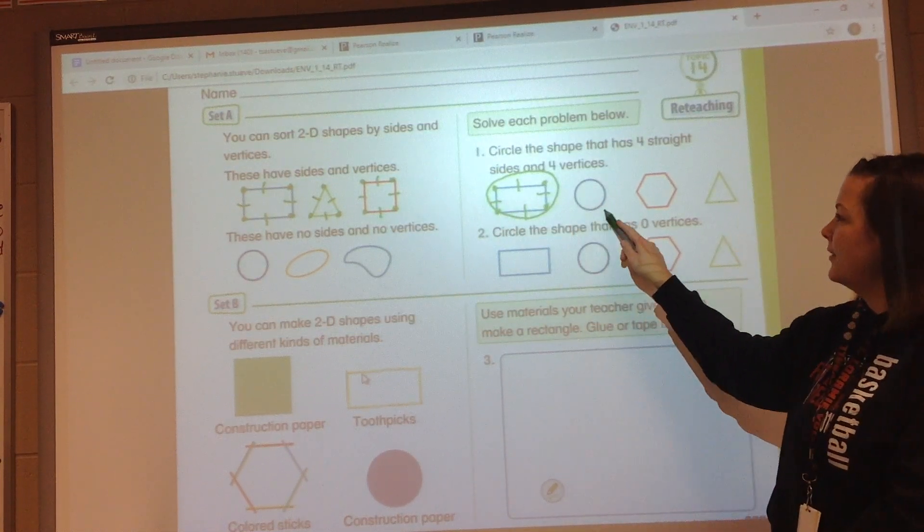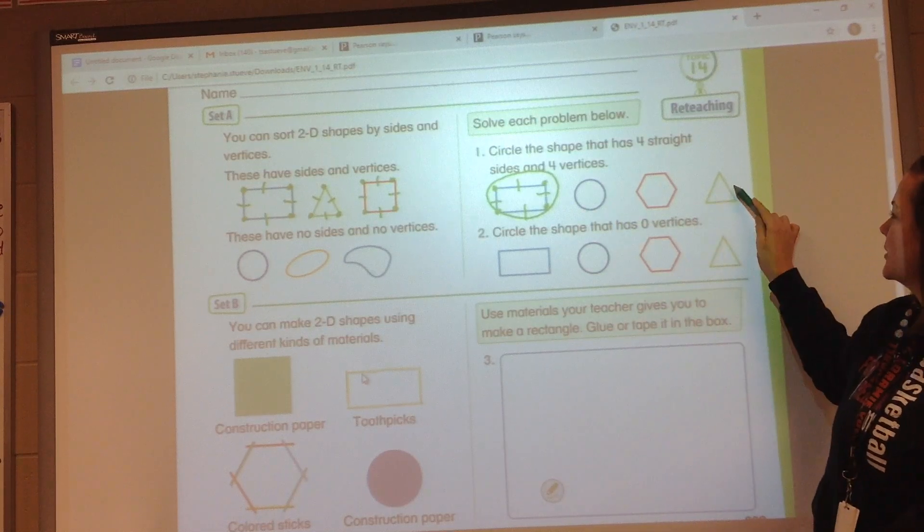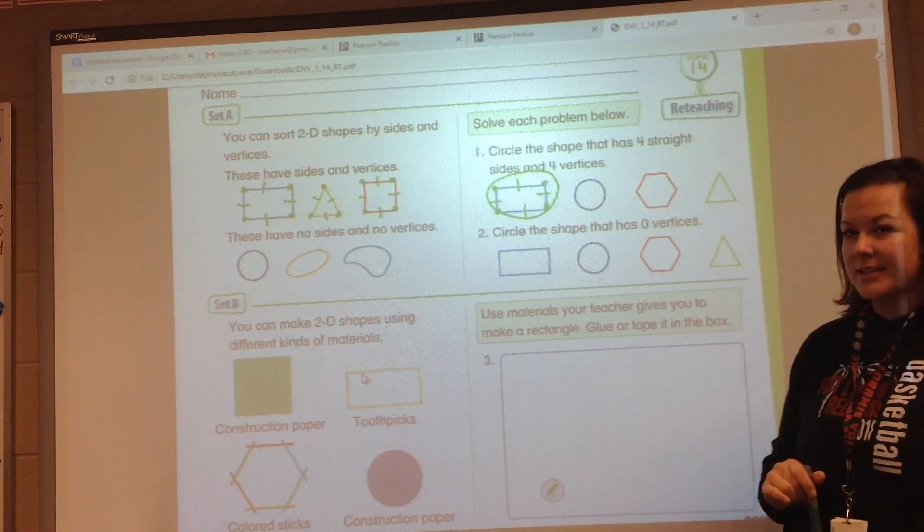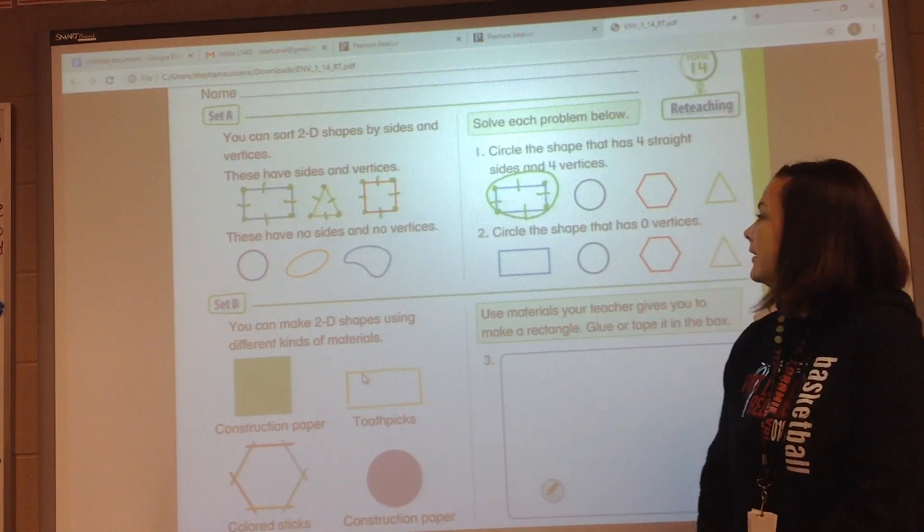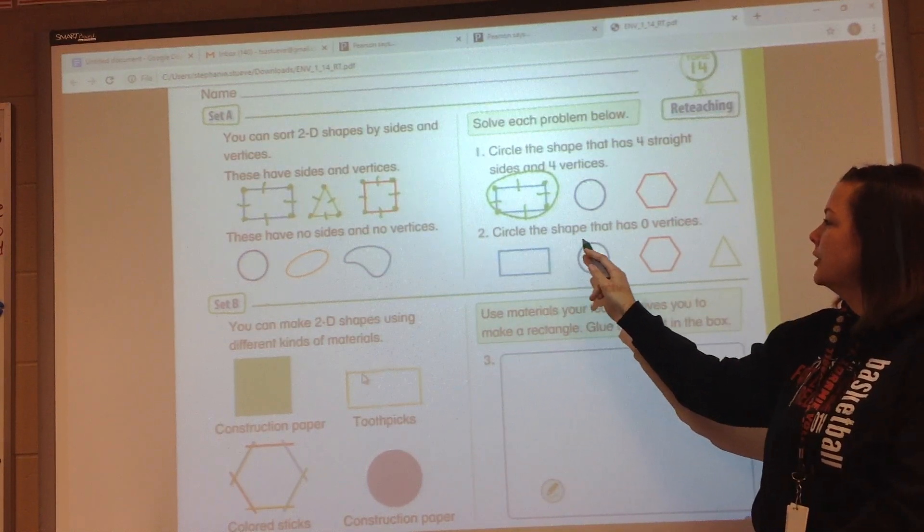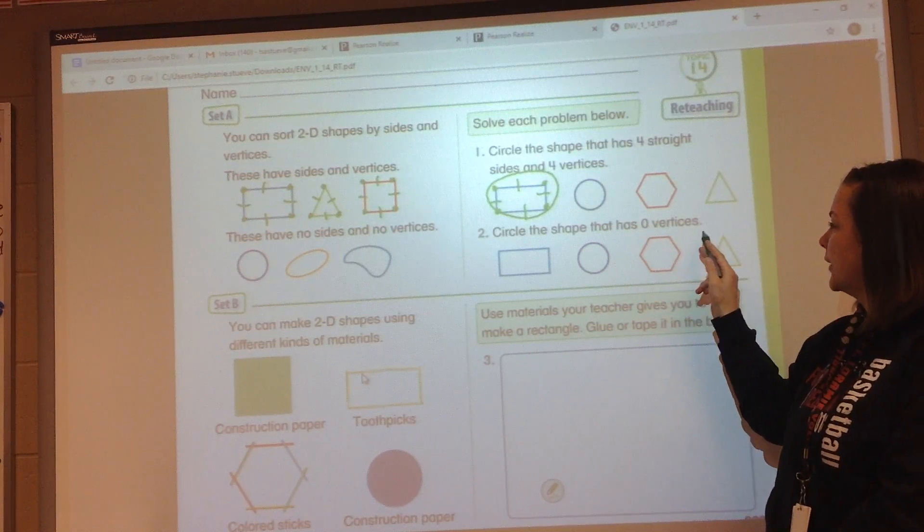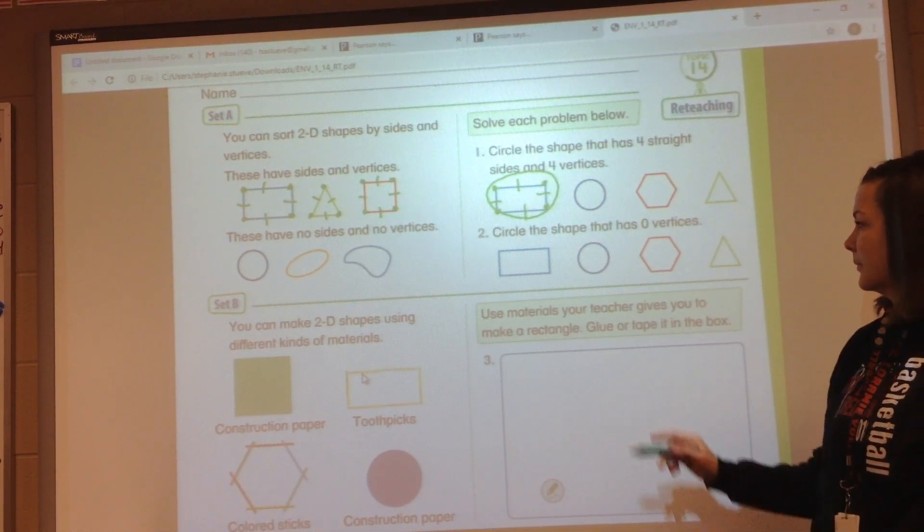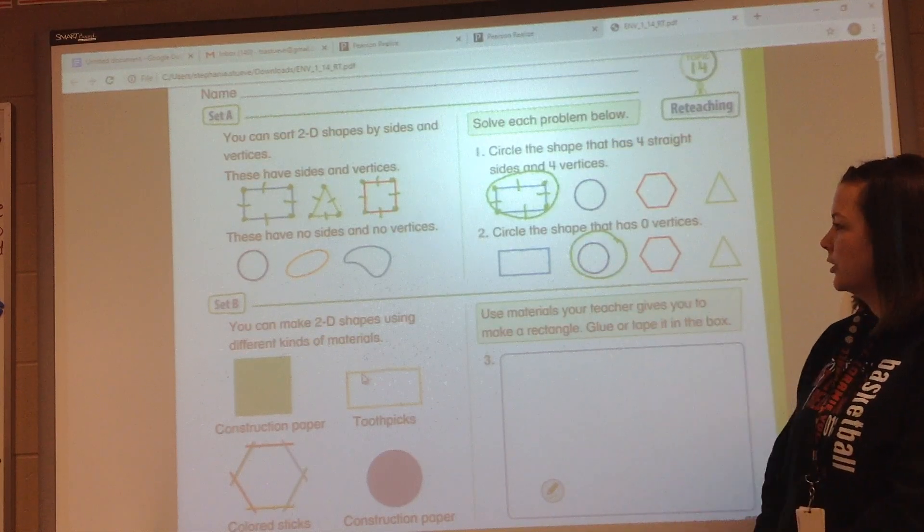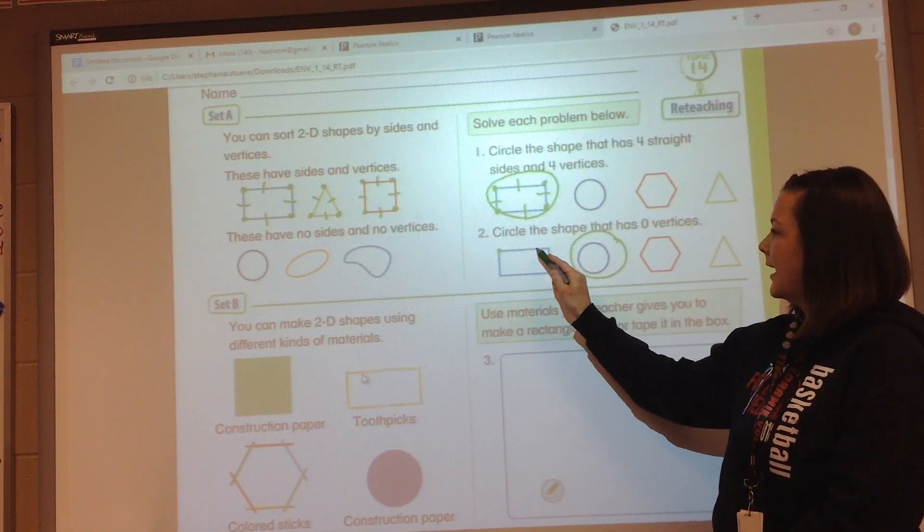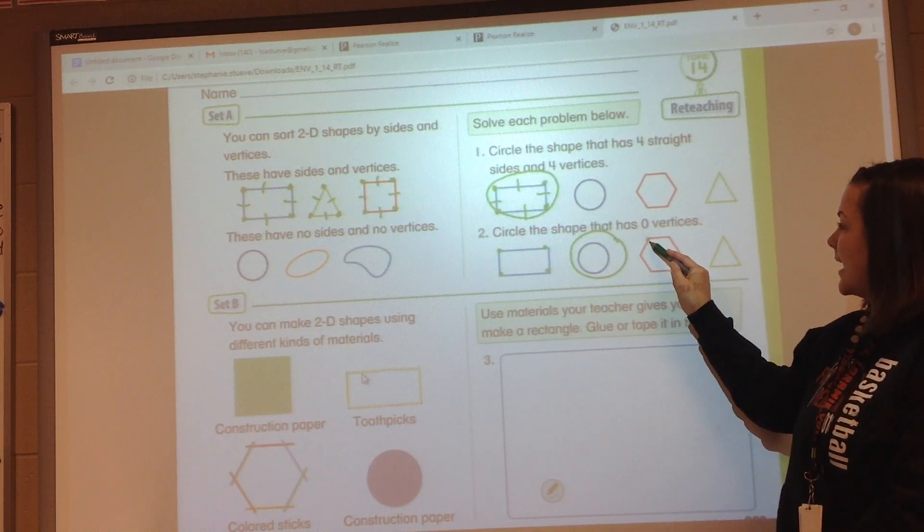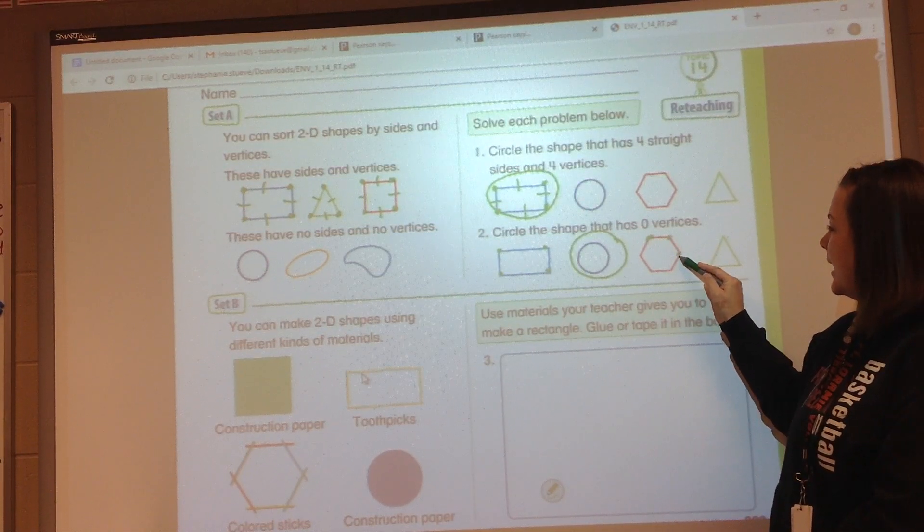This does not have any sides or vertices. This one has three and this one has six, so it's a hexagon. Number two, circle the shape that has zero vertices. You should have circled the circle here. We can see this has four vertices, this is a hexagon so six sides and six vertices, and then our triangle has three vertices. Good job.